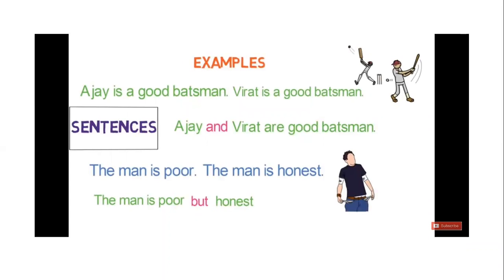For example: 'Ajay is a good batsman' and 'Varath is a good batsman' are two different sentences. If we want to combine them we use a conjunction, because conjunctions are the connectors in parts of speech. So we get 'Ajay and Varath are good batsmen.' Similarly, 'The man is poor' and 'the man is honest' are two sentences. Using a conjunction it becomes one: 'The man is poor but honest.' Here the two sentences are joined by the conjunction 'but.'